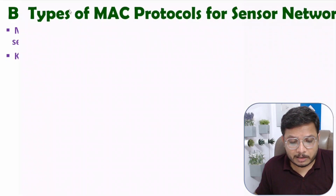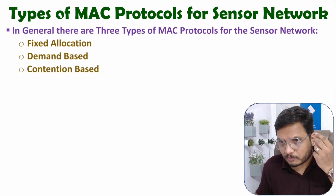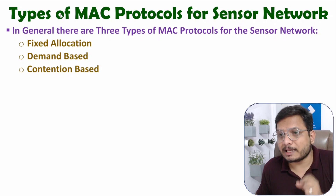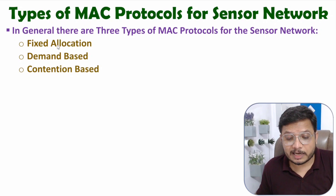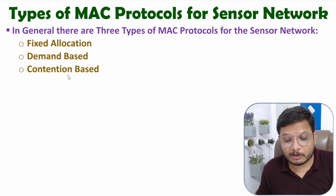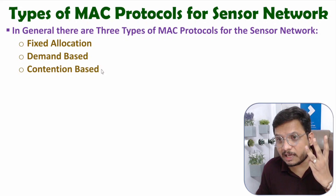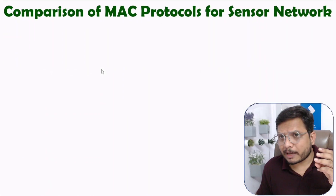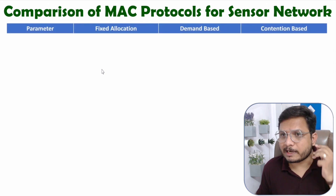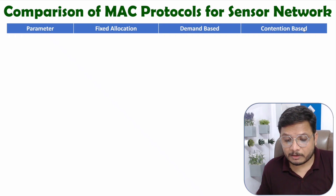Now let us talk about different types of MAC protocols. Based on channel allocation, there are three categories: fixed allocation, demand-based allocation, and contention-based allocation. MAC protocols can be classified into these three categories, and let us compare them with respect to a variety of parameters.